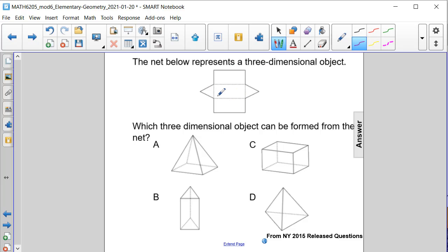Well, what we can see in this net is we have two bases that are both triangles, and we have some rectangles that would be used to join the two bases together.